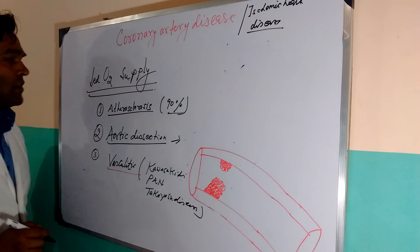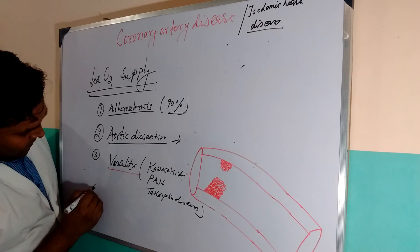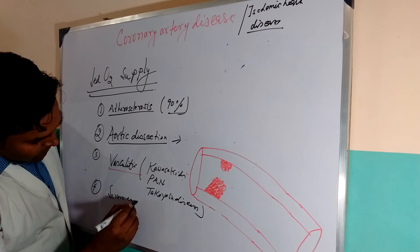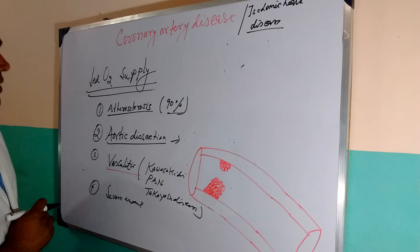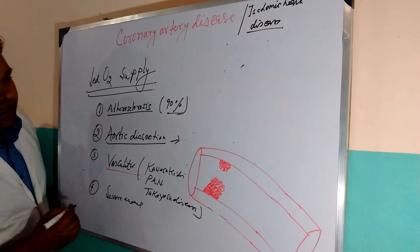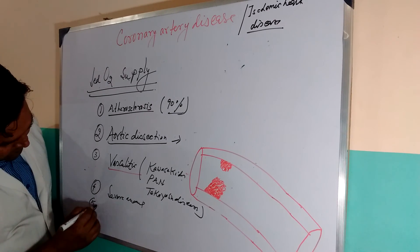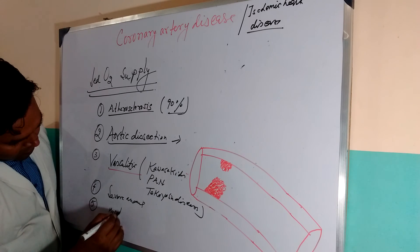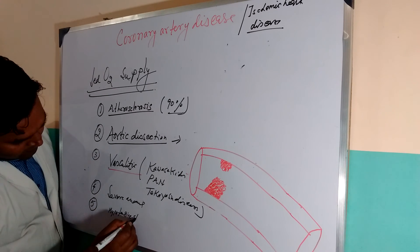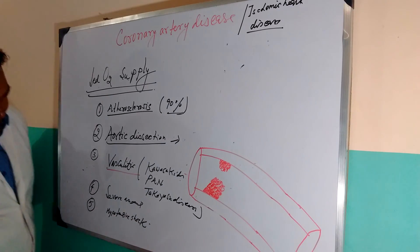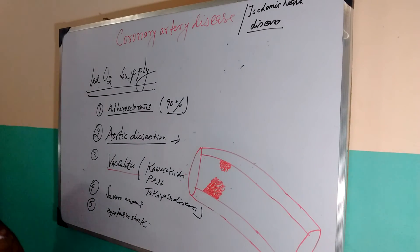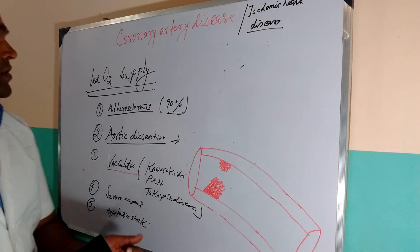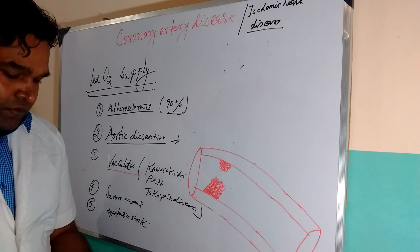Other conditions causing decreased oxygen supply include severe anemia and hypotensive shock, both of which can present as ischemic heart disease.